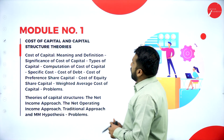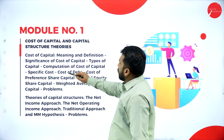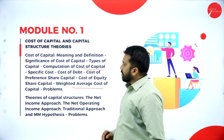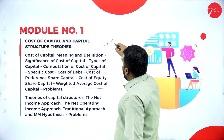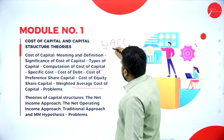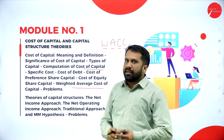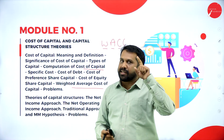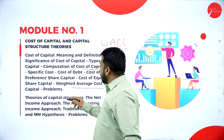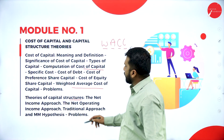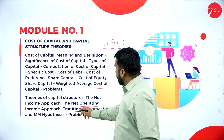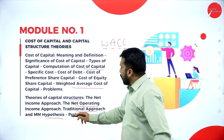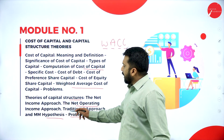In this module we learn the meaning, definition, and computation of cost of capital, along with problems. There is also the weighted average cost of capital — we call it the WACC table. We have two or three small formulas, and once done with those, we move to the WACC table. Then we cover theories of capital structure: the net income approach, the operating income approach, the traditional approach, and the MM hypothesis, including small problems on MM hypothesis.